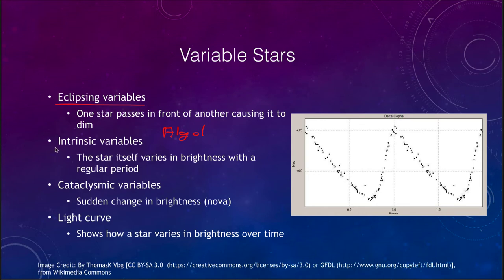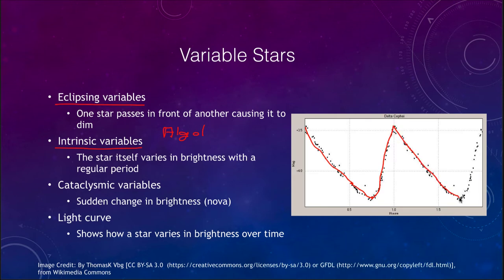There are also intrinsic variables. These are the ones we're going to look at more, because the star itself varies in brightness with a regular period. We can see an example of a Cepheid variable shown here — they will vary in brightness, going fainter and fainter, then quickly rising up and getting brighter again, continuing to do this with a very regular period. These are the ones we want to look at for being able to determine distances.